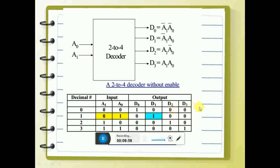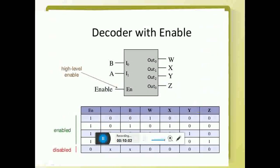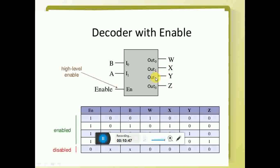There are some decoders which are available with an enable signal. In addition to inputs A and B, there is also an enable signal, which is a high-level enable — only if it is high is the decoder enabled; if it is 0, it is disabled. Once disabled, A and B are treated as don't cares, meaning whatever the value of A and B, the output is not affected — it continues in the same state. When enable is 1, it is enabled: 0,0 is available at output 0; 0,1 at output 1; 1,0 at output 2; and 1,1 at output 3. This is a decoder with enable.